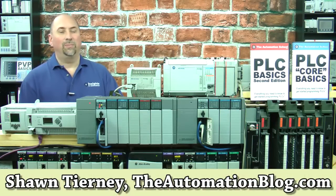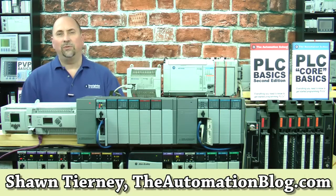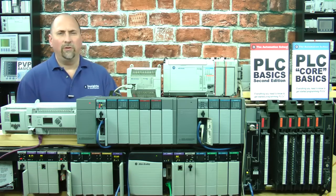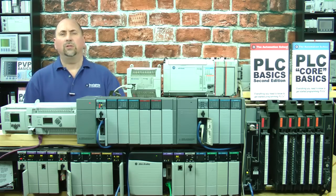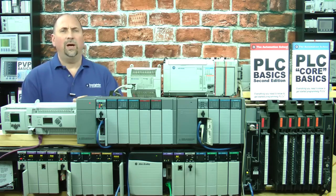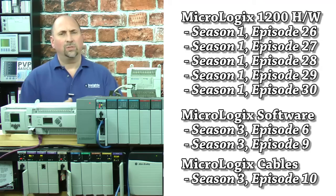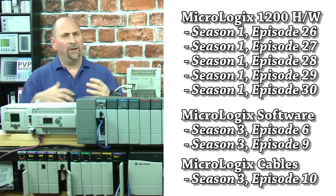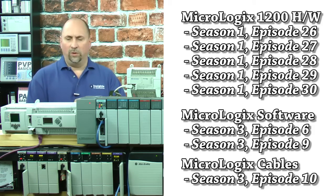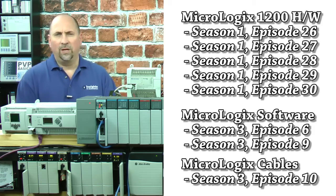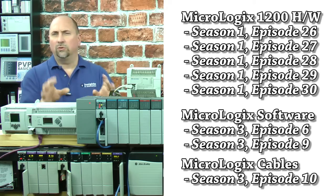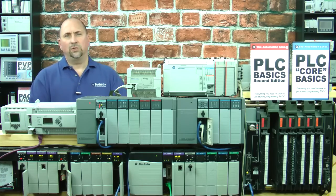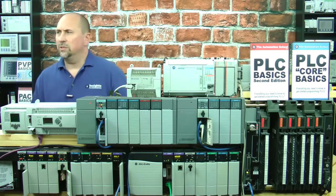Hey everybody, Sean Tierney here with TheAutomationBlog.com. In this episode of The Automation Minute, I'm going to show you how to set up communications to a MicroLogix 1200, then we'll write a sample program and actually download it to it. Before we get started, I want to remind you that in previous episodes we took a tour of the Micro 1200 hardware, covered what software and cables you need to program it. So check those previous episodes out if you missed them. Right now we're going to set up communications and download a program to it.